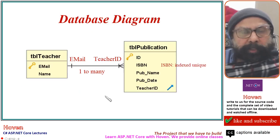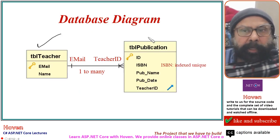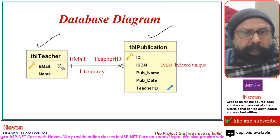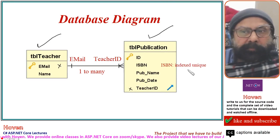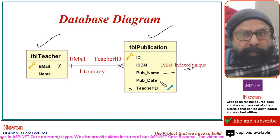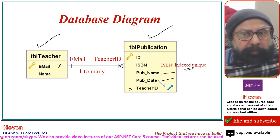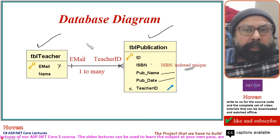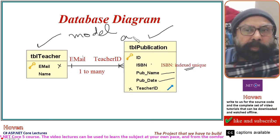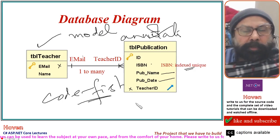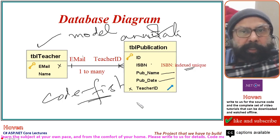The database diagram for this project will consist of a table for teachers and a table of their publications. This is a one-to-many relationship going from the email to the teacher ID. There will be a unique index on the ISBN, and you see the names of the columns: pub_name, pub_date. These names, plus this index, plus this foreign key relationship, plus the names of these tables — all these will be done with the help of model annotations. That is the code-first approach of generating the databases from C# code. This is what we shall be learning in this project.